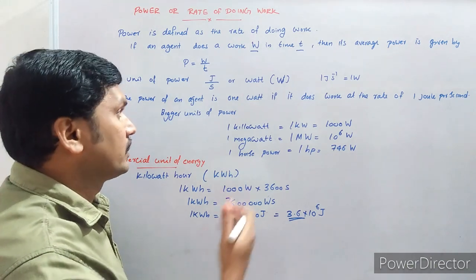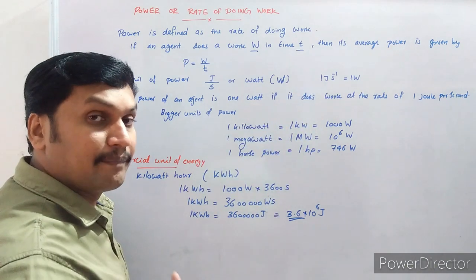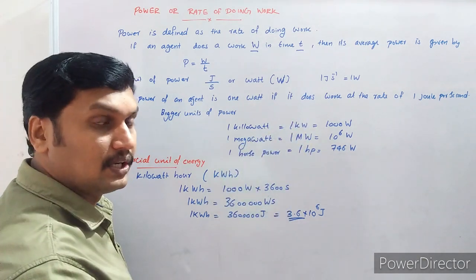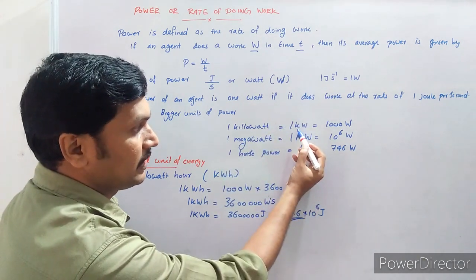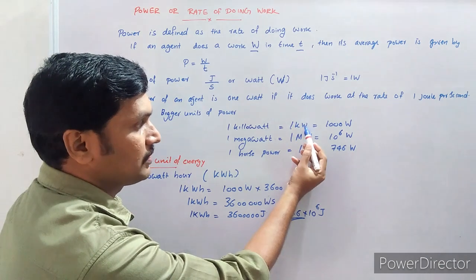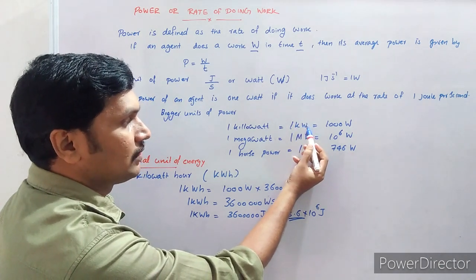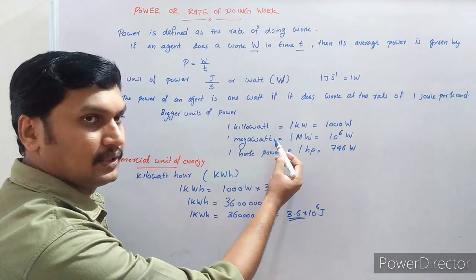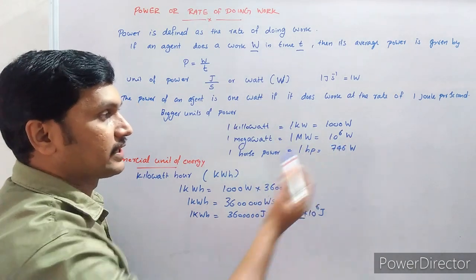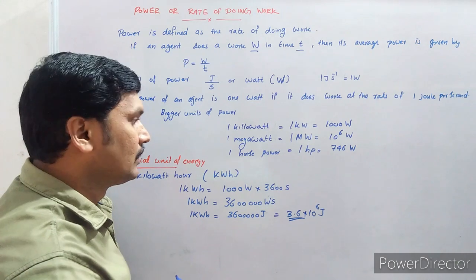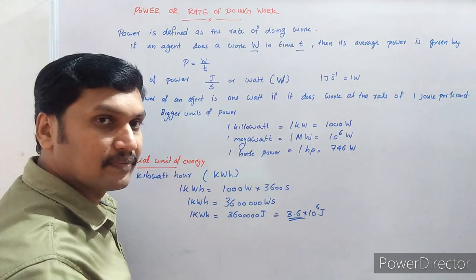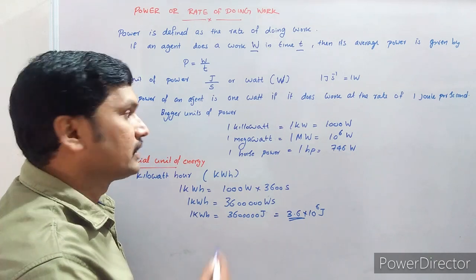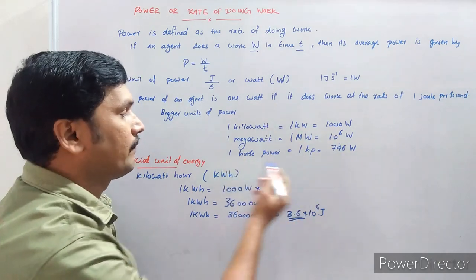Instead of Watt, we have some bigger units of power. They are kilowatt, represented as kW — one kilowatt means 1000 Watt. Megawatt — one megawatt is equal to 10 to the power 6 Watt. Also horsepower — one horsepower is equal to 746 Watt. These are some bigger units of power.